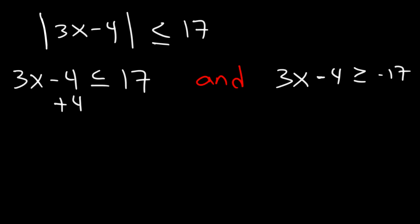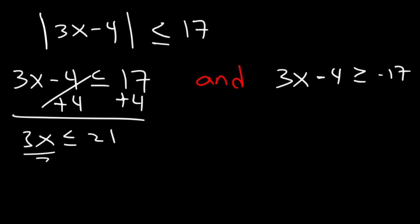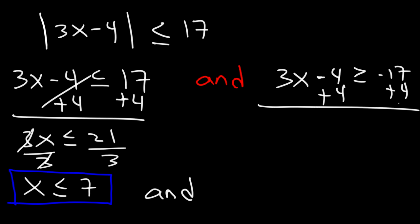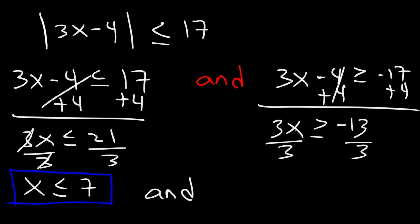Let's solve both inequalities. Adding 4 to both sides: 17 plus 4 is 21. Dividing both sides by 3: 21 divided by 3 is 7, so our first answer is x is less than or equal to 7. For the second inequality, adding 4 to both sides: negative 17 plus 4 is negative 13. Dividing both sides by 3 gives us x is greater than or equal to negative 13 over 3.